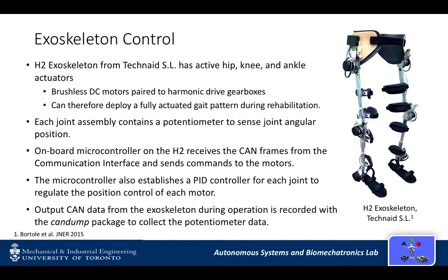The device used for the physical exoskeleton control is the H2 exoskeleton from TechNade, which contains active hip, knee, and ankle joints, and can deploy a fully actuated gait pattern through the use of brushless DC motors paired to harmonic drive gearboxes. The onboard microcontroller receives the CAN messages from the communication interface and sends them to all joints, and also establishes a PID controller for each joint to regulate the joint position control.